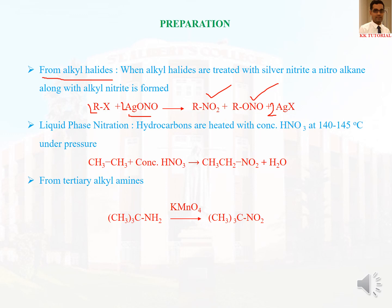The next method is liquid phase nitration. Hydrocarbons are heated with concentrated HNO3 under high temperature and high pressure to get nitroalkane. This direct nitration of alkanes is very difficult compared to that of arenes; hence it is not a very good laboratory method, but may be of commercial importance for bulk production of small nitroalkanes. Vapor phase nitration can also be performed, where the reaction is carried out in the vapor state by heating the alkane with nitric acid at a high temperature of around 700 Kelvin.